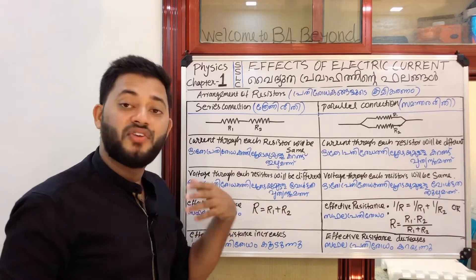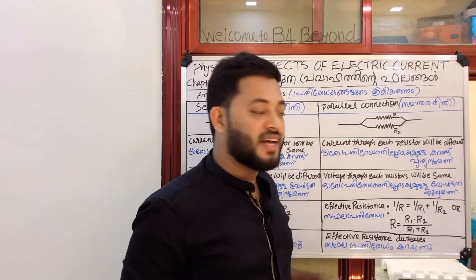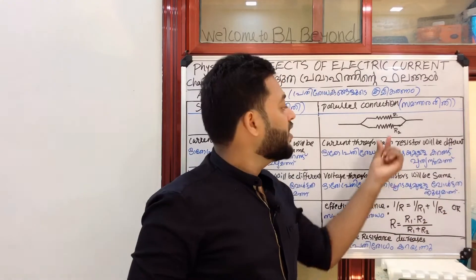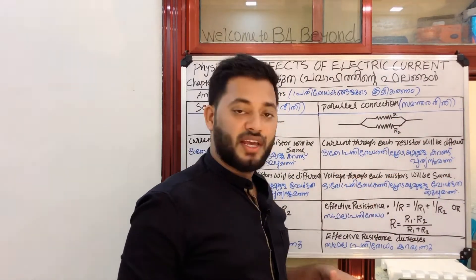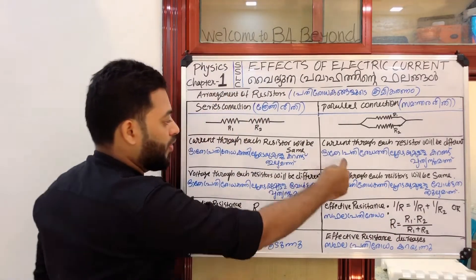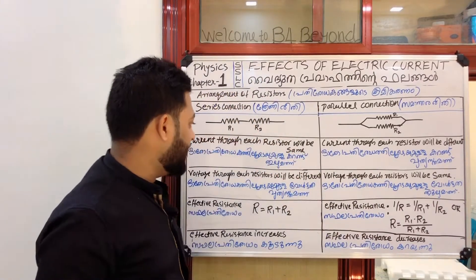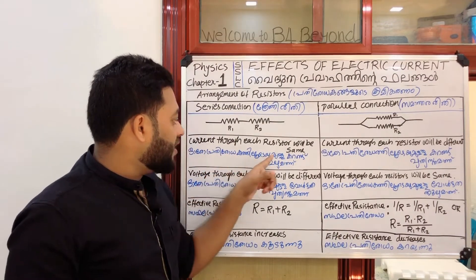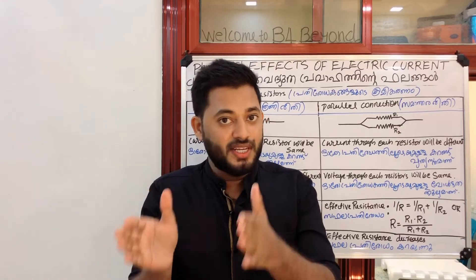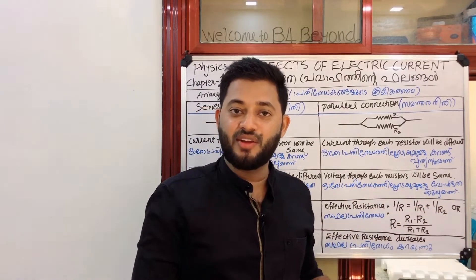In a parallel connection, the current is different. The current will be split into I1 and I2, and two branches will flow. If you have the same voltage at both ends, the voltage here will be the same. In series, the voltage is different; in parallel, the current is different.